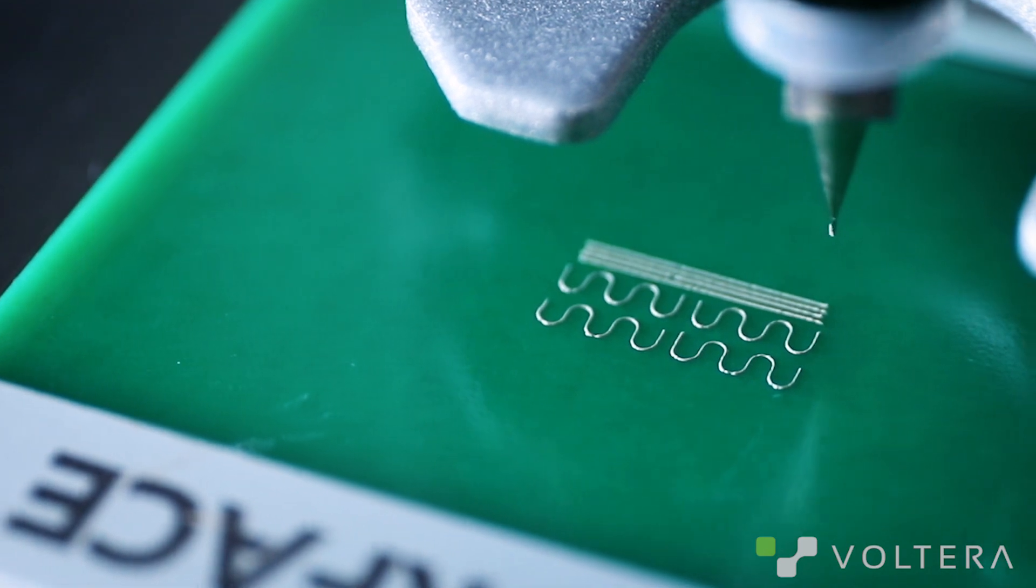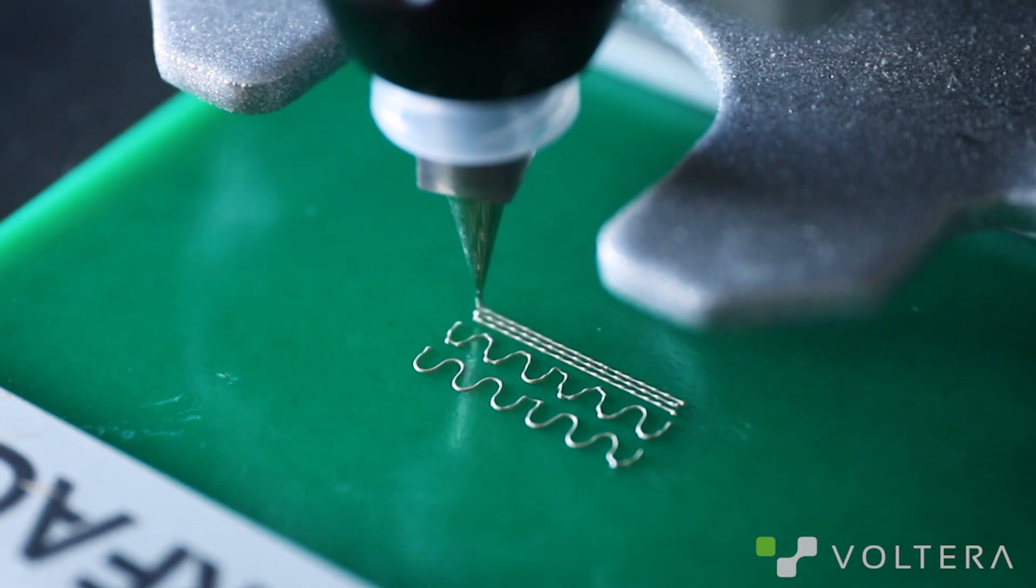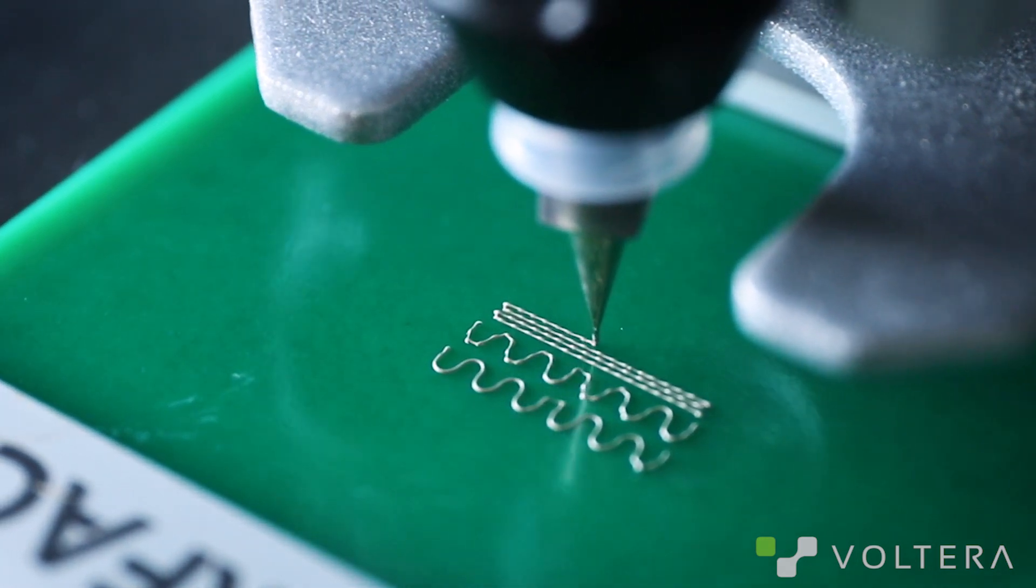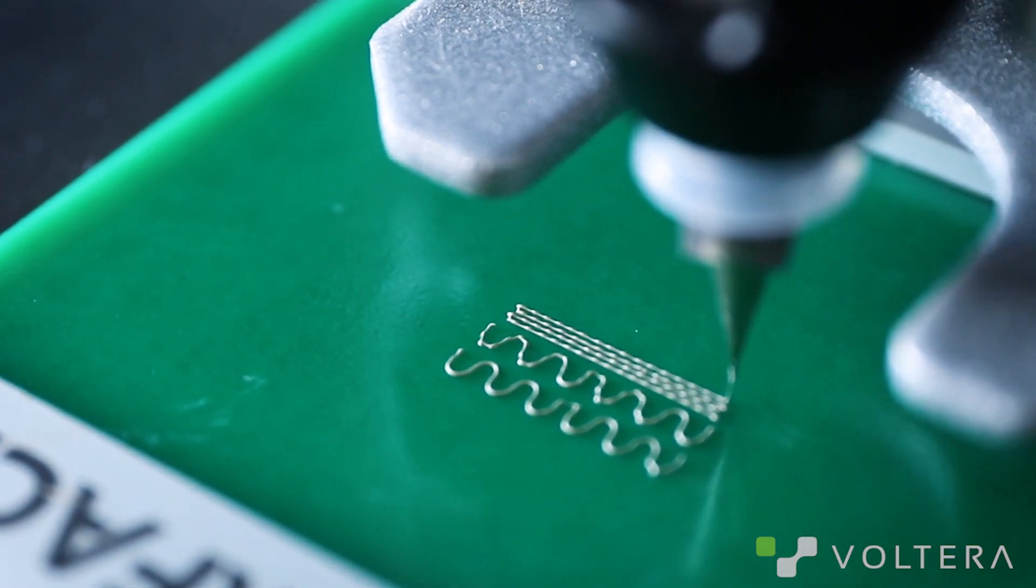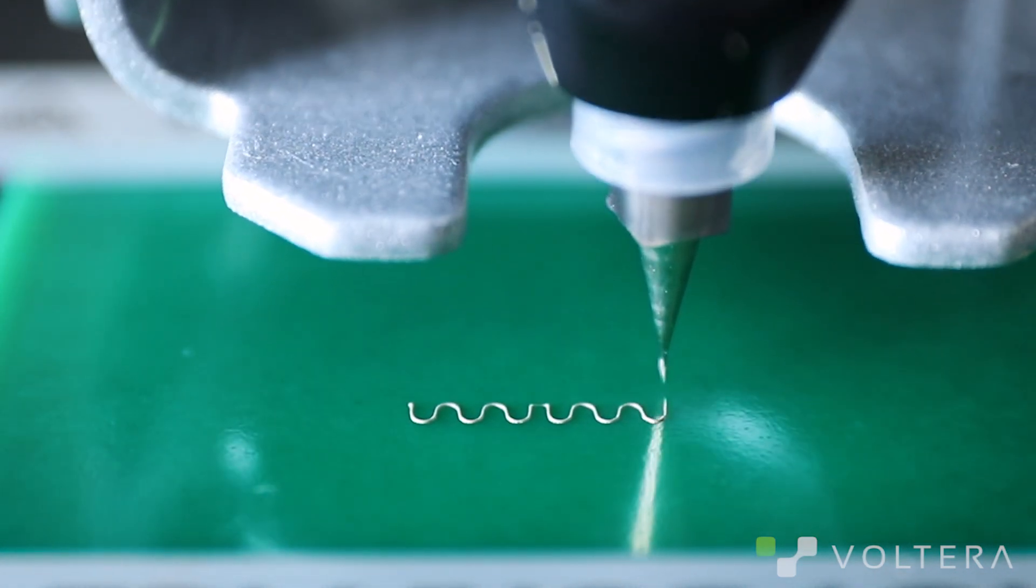Print height refers to the gap between the substrate and the tip of the nozzle. If the nozzle is set too high, the ink might ball on the tip and drop to the substrate in clumps, or more subtly, dispense in a shape that doesn't match the motion of the nozzle, so your traces are too tall and narrow.